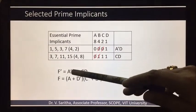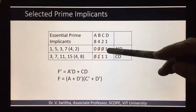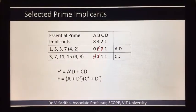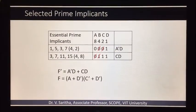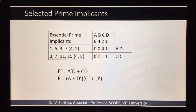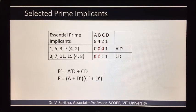So we'll get F̄ = ād + cd, because the given terms are max terms. Similarly, F is obtained by complementing F̄, giving F = (a + d̄)(c̄ + d̄). This is how we can get the simplified form of the function in Product of Sums including the don't care conditions. Thank you.